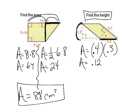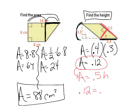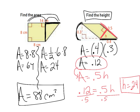Now looking at it the other direction, the base is 0.5 and we don't know the height — but we already know the area is 0.12. So: 0.12 equals 0.5 times height. Divide both sides by 0.5: height equals 0.12 divided by 0.5, which gives 0.24. Notice this is a height, not an area, so you do not use square units.